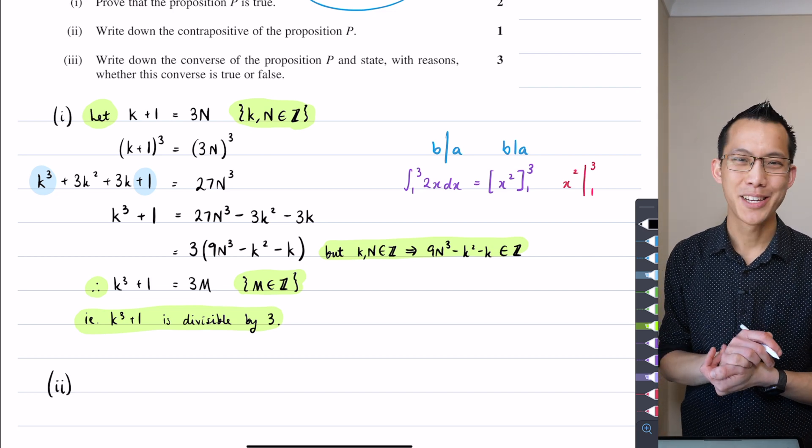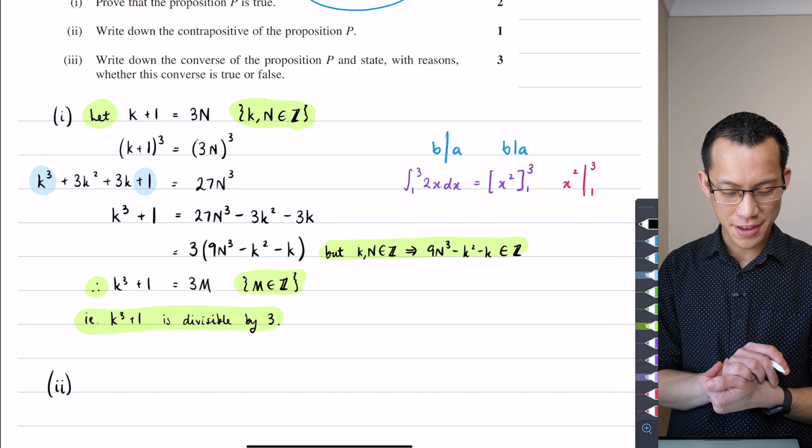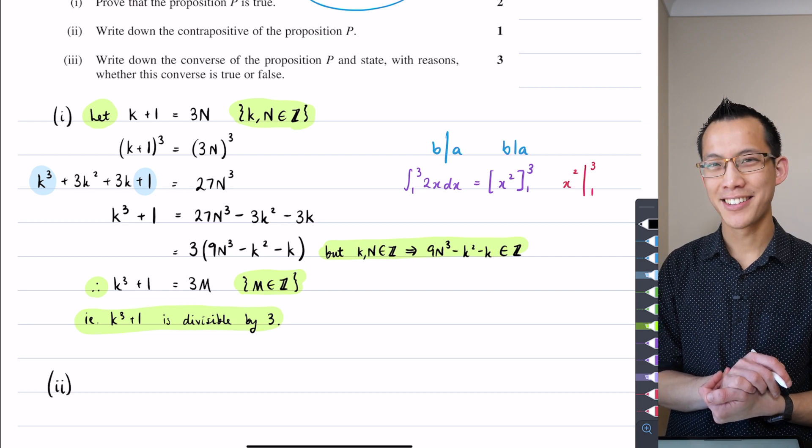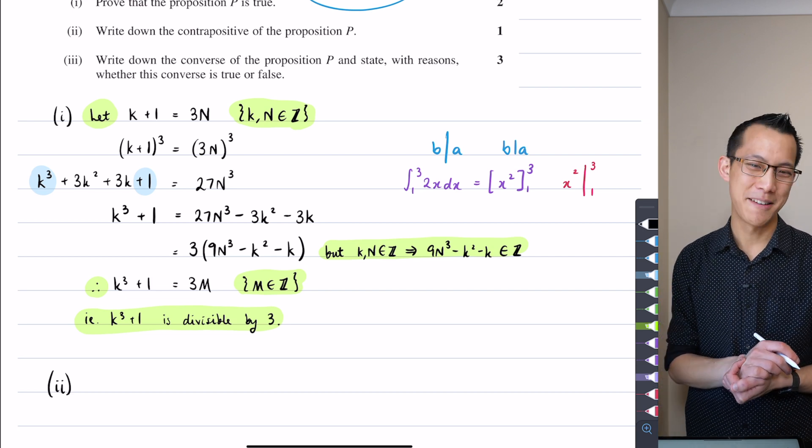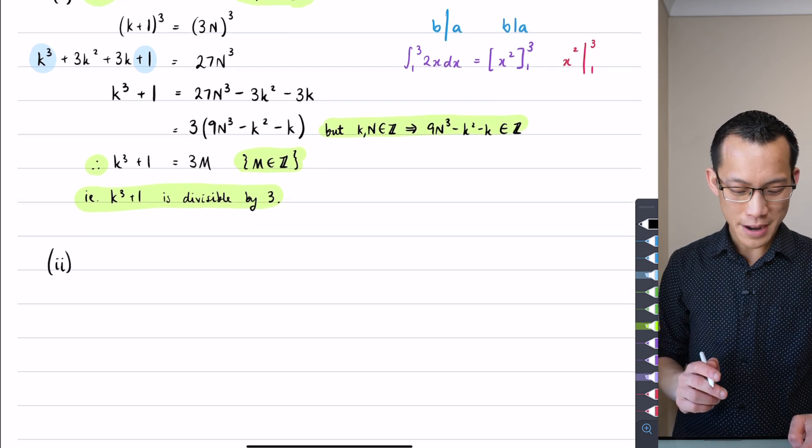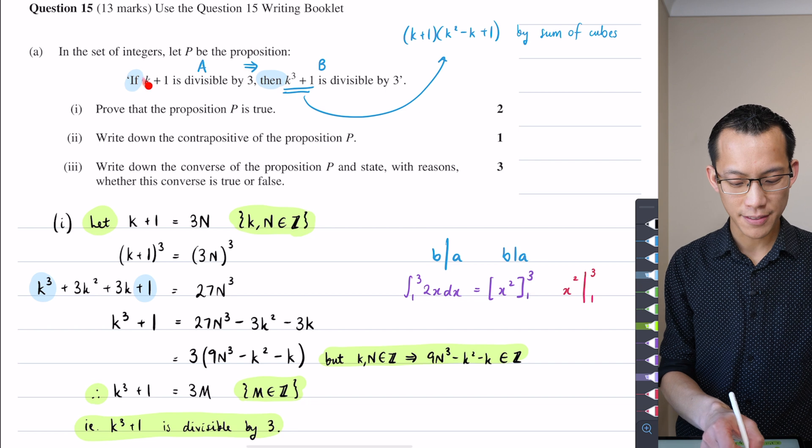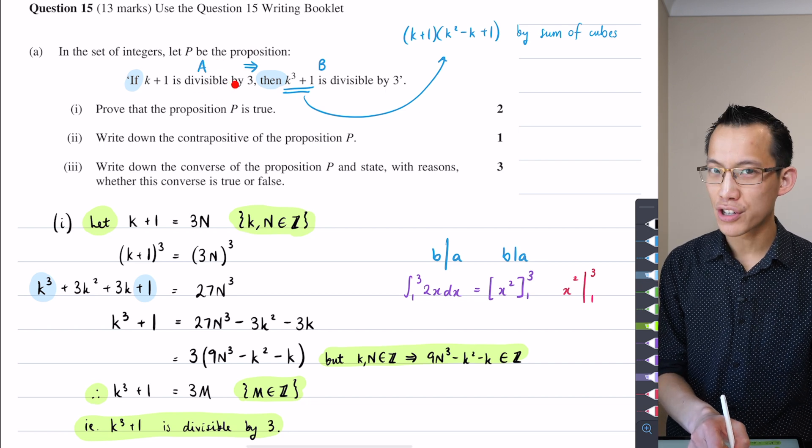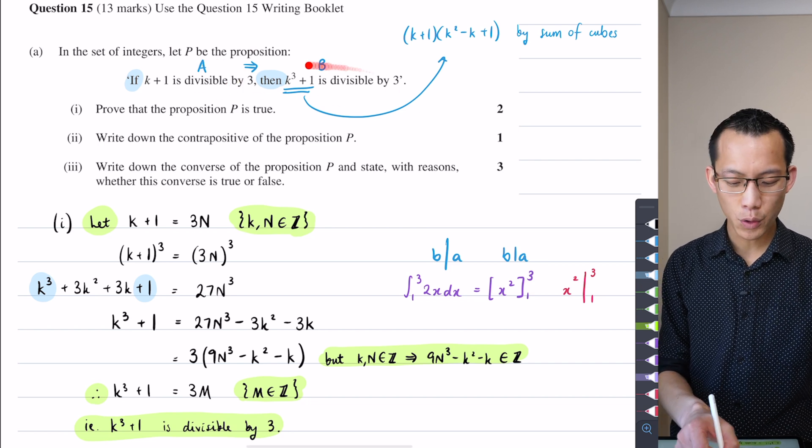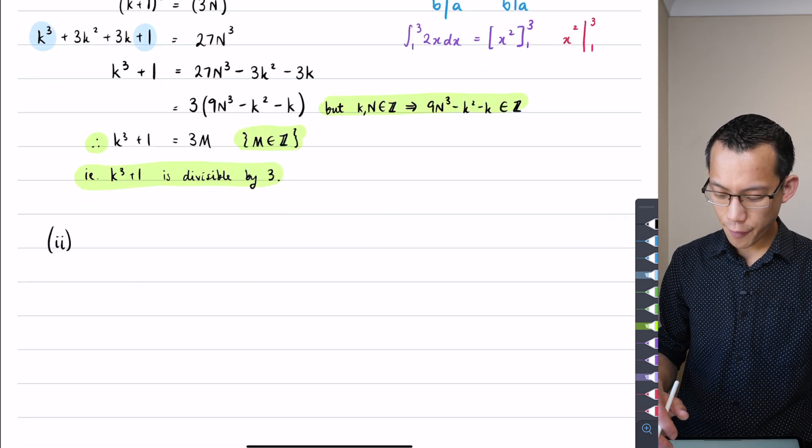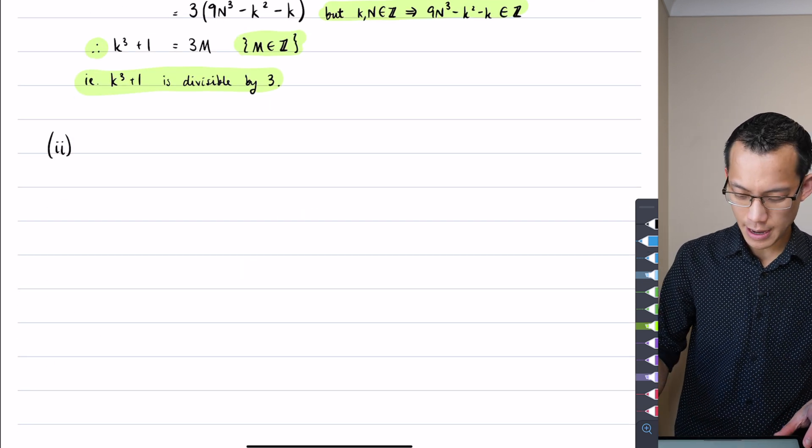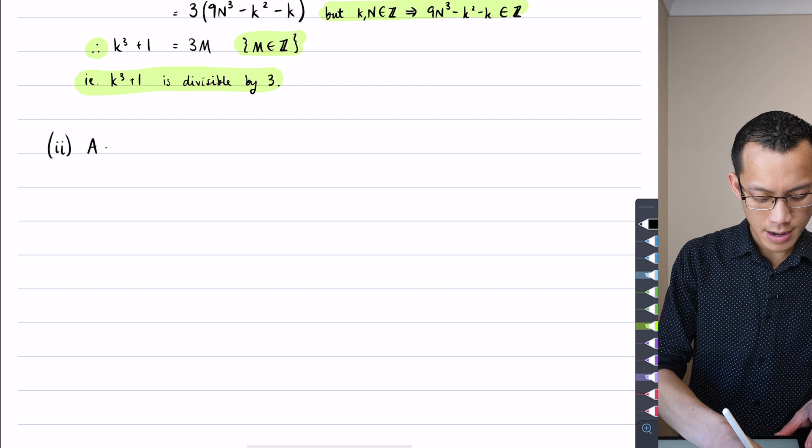Part two. For the number of you who were thinking 'tell me again what a contrapositive is', let me help you remember. I've called this part of the statement A, or this part of the proposition, and I've called this part B.